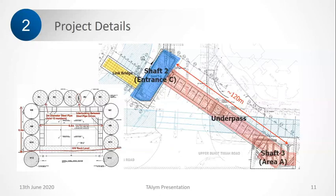In cross section, this is how it looks. All these pipes are driven first, and once all the pipes are driven from the launch shaft or entrance shaft, the excavation can commence. As excavation progresses, the frames are installed.